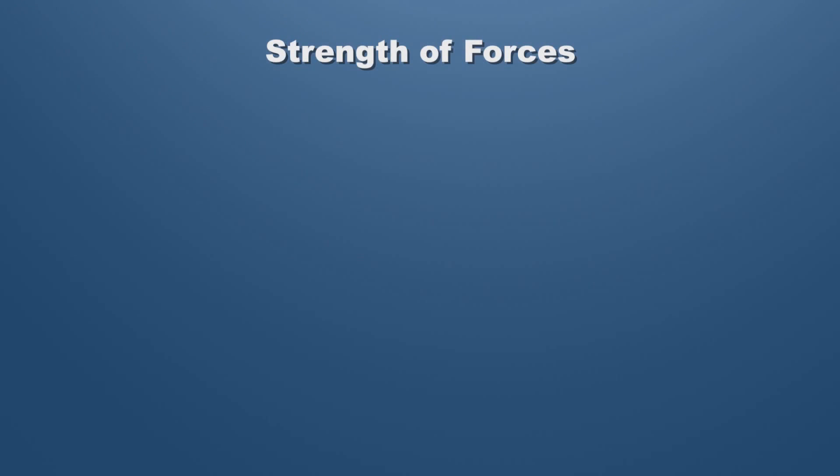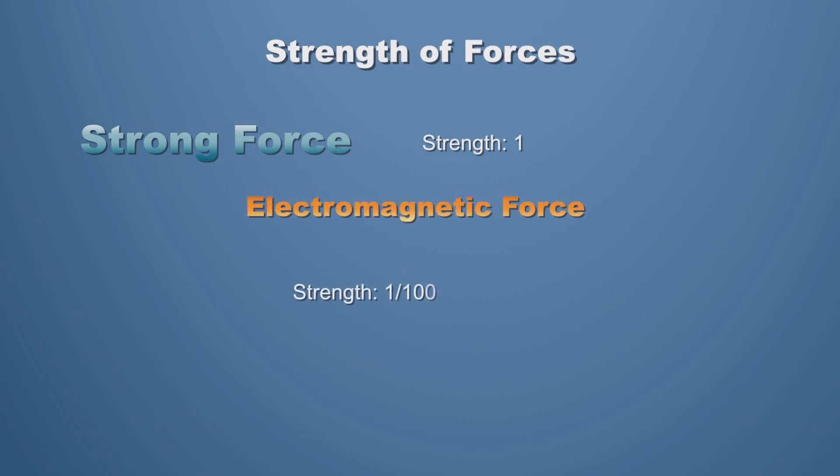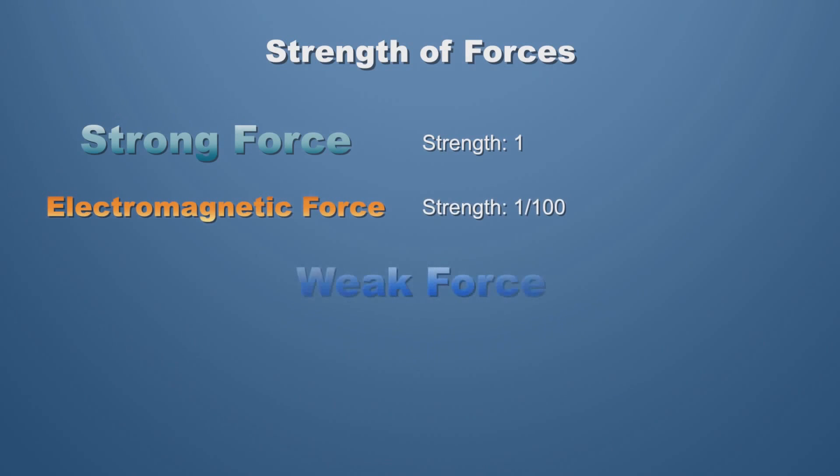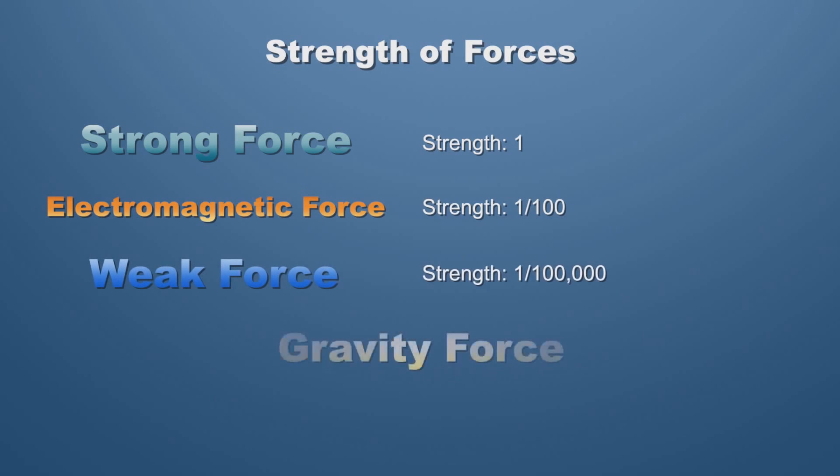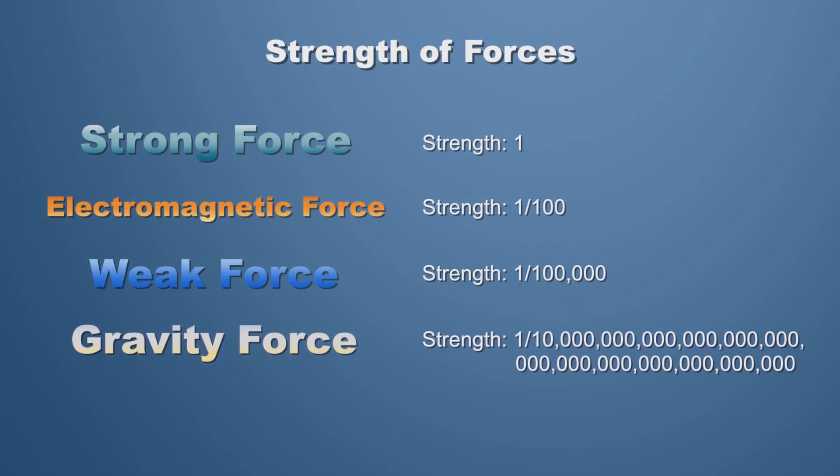The strength of the forces is really quite different. If we call the strength of the strong force to be one unit of strength, like one mile or one hour, then the strength of the electromagnetic force is about 100 times smaller. The strength of the weak force is about 100,000 times smaller, and the strength of the puny force of gravity between two particles is a one followed by 40 zeros smaller. This weakness of gravity is why we can't study it at particle accelerators, and it's a huge mystery. We don't understand why gravity is so much weaker than the other forces. Gravity is currently not part of the Standard Model.